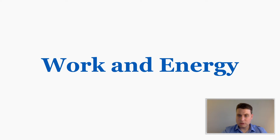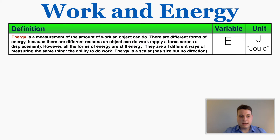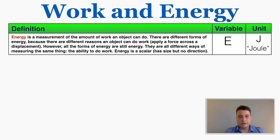This video is going to be about the definition of work, the definition of energy, and how they connect. The definition of energy is that it's a measurement of the total amount of work an object can do. There are different forms of energy because there are different reasons why an object can do work — apply a force across a displacement — but all the forms of energy are still energy; they're all different ways of measuring the same thing: the ability to do work.